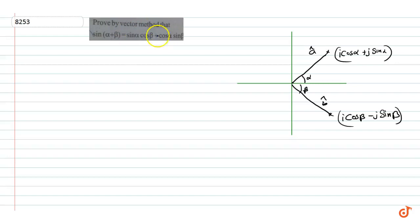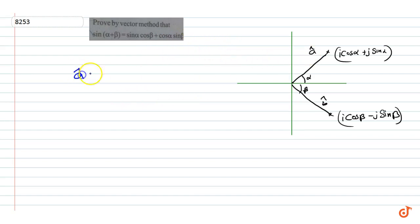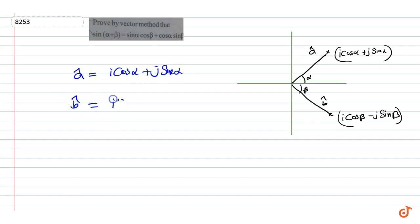In this question, we have to prove by vector method that sin(alpha + beta) is equal to sin alpha cos beta plus cos alpha sin beta. Here, unit vector A is equal to i cos alpha plus j sin alpha, and unit vector B is equal to i cos beta minus j sin beta.